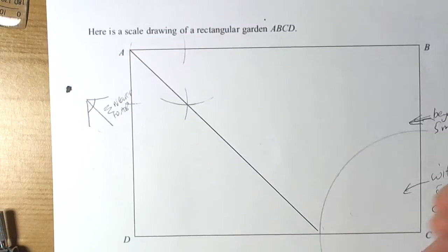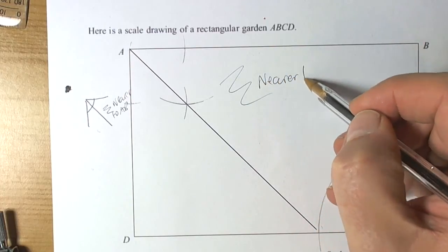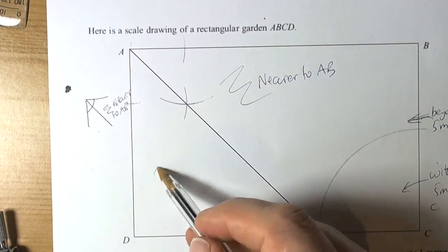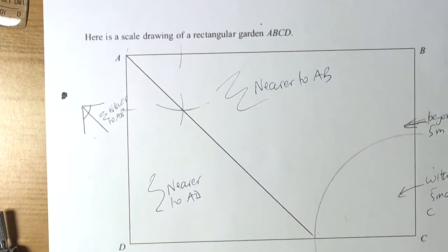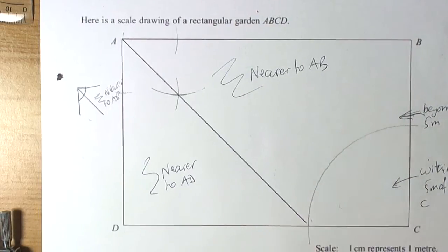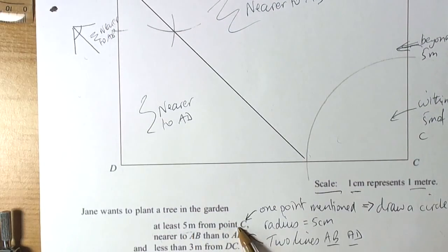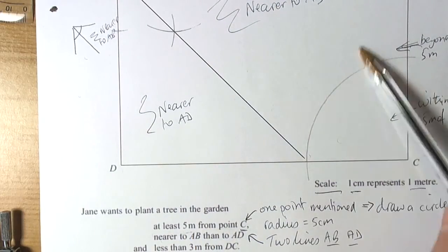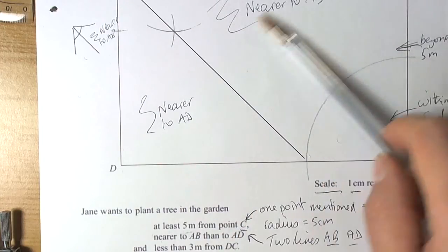Because we don't know where this tree is going to be yet, we draw all the way across the shape through there. Basically then, anything over here is nearer to AB, anything down here is nearer to AD. We're kind of getting a feel for where this tree is going to be. It's going to be over here somewhere, and it says it's got to be at least five metres from point C. So we're recognising the tree is going to be in here somewhere, because it's got to be greater than five metres. But it's also got to be nearer to AB.